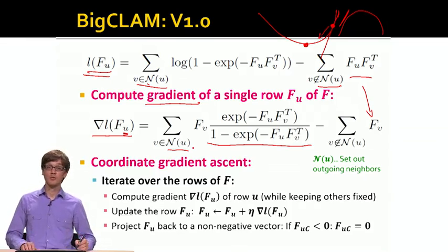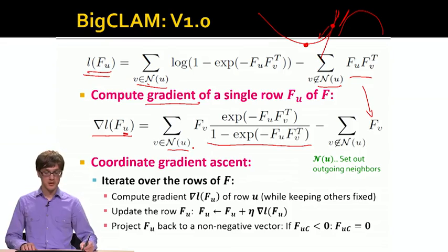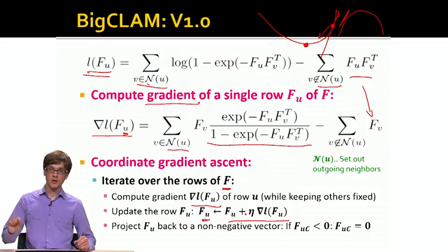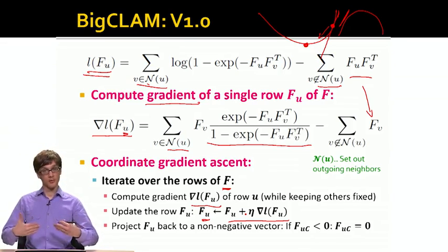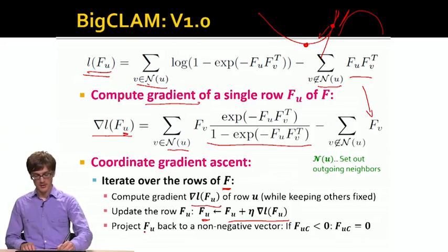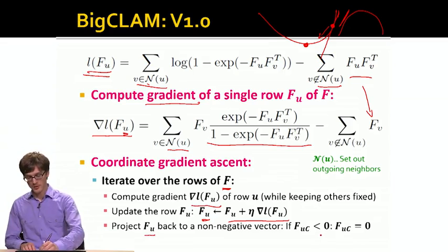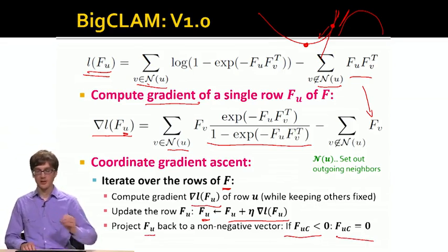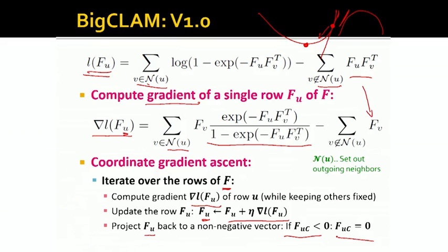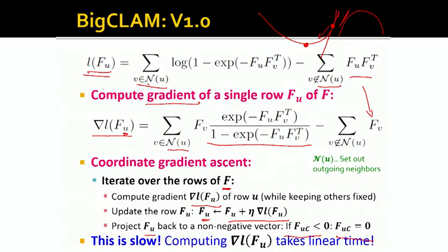One important thing here is N(u) is simply the set of neighbors of a given node u. So what we could do now is to say, how do we solve this optimization problem? We can simply iterate over the rows of our matrix F. For every row we can compute the gradient of the log likelihood. And then we just update that given row by moving for a small direction in the direction of the increased slope. So the idea is that basically we compute the gradient, we compute the slope, and move in the direction of the slope. One little caveat here is that sometimes what can happen is that membership strands can become negative. If the membership strand becomes less than zero, we just reset it back to zero. And we keep iterating this until the method stops changing F, which means we have converged to the top.